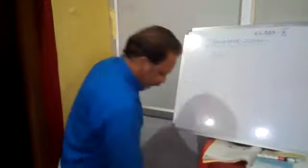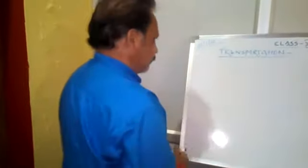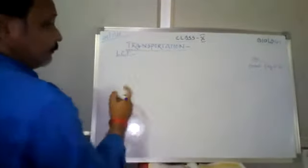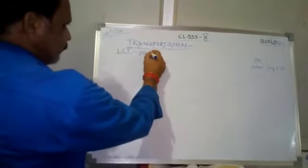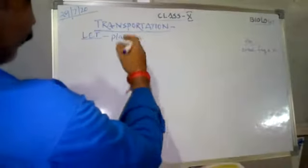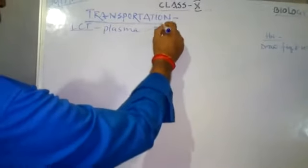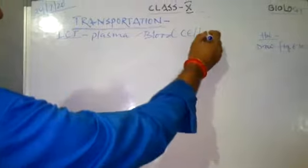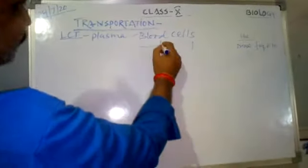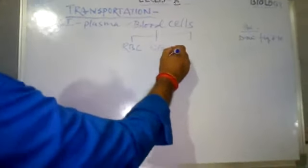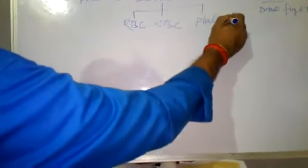First of all, I want to give you some knowledge about blood. Number 1: it is liquid connective tissue. Blood has a liquid matrix known as plasma, in which solid particles are embedded. What are those solid particles? Those solid materials are our blood corpuscle cells. These blood cells are of three types: red blood cells, or RBC; white blood corpuscle cells, WBC; and the third one is platelets.